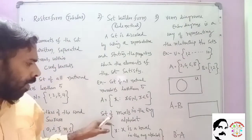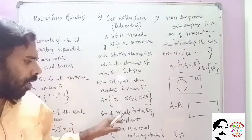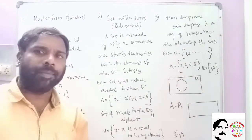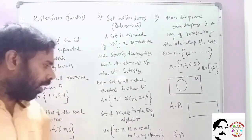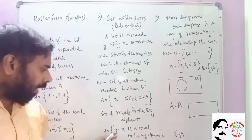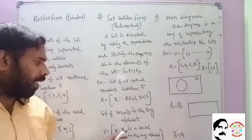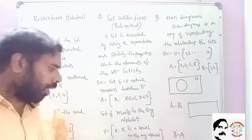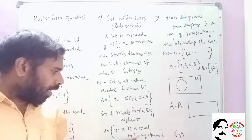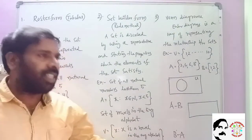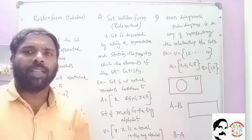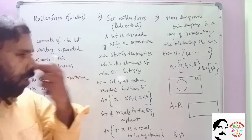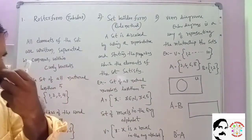Another example: the set of all vowels in the English alphabet. In Set Builder Form, this is written as: {X : X is a vowel in the English alphabet}.